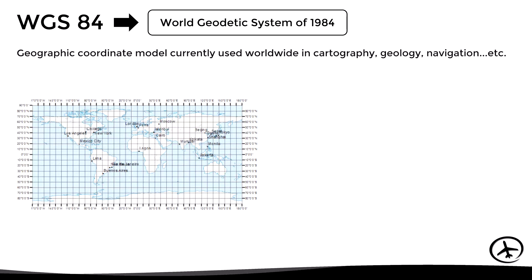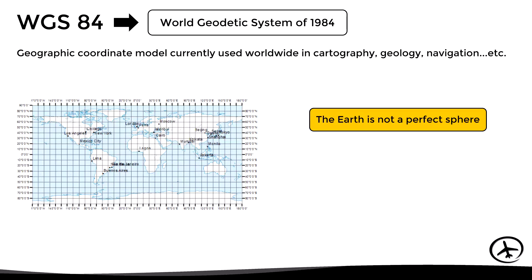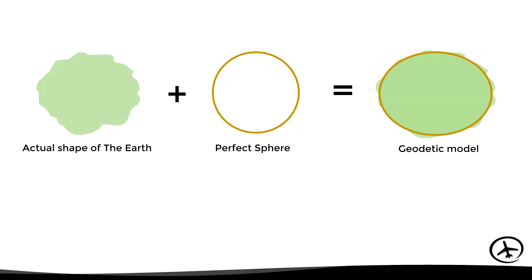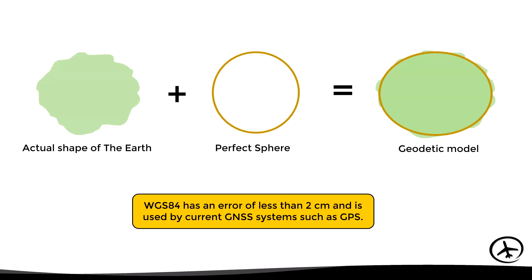The current geographic coordinate system is based on a model called the World Geodetic System of 1984 (WGS-84), established as the standard by ICAO for air navigation purposes. A geodetic model is necessary because the earth is not a perfect sphere, and therefore the geoid used as reference must be adapted as closely as possible to the actual shape of the earth. The WGS-84 has an error of less than two centimeters and is used by current GNSS systems such as GPS.